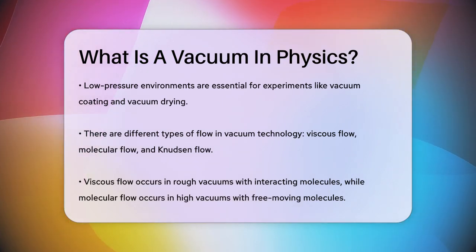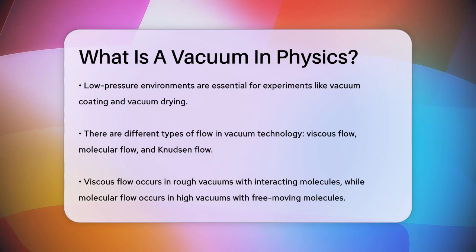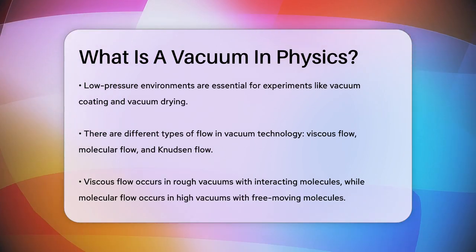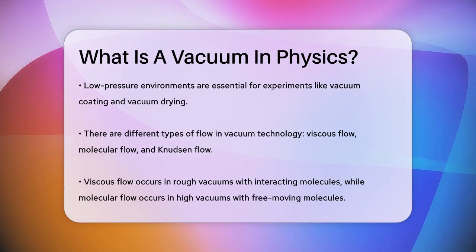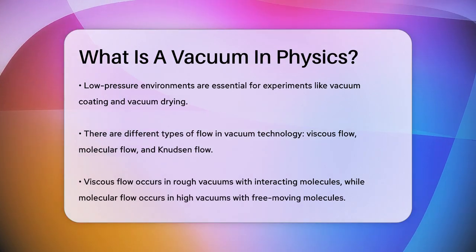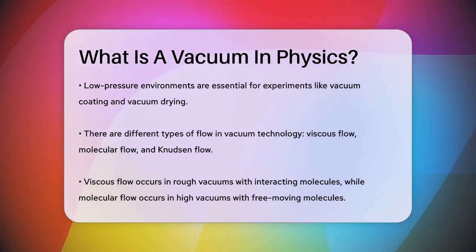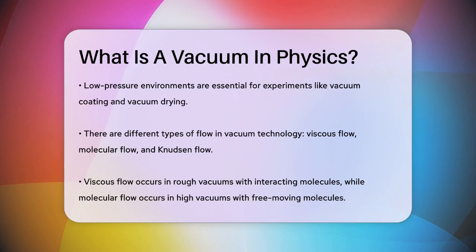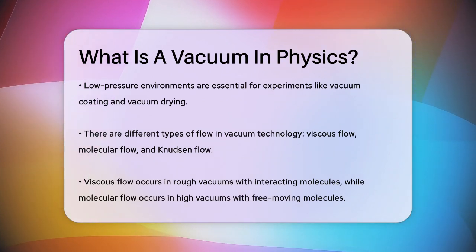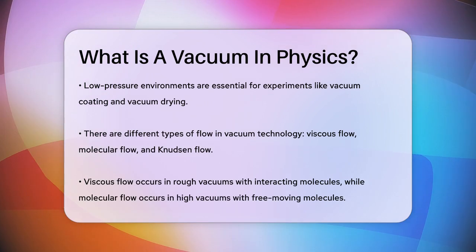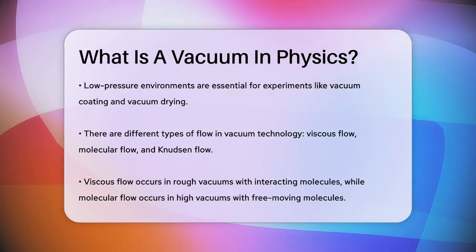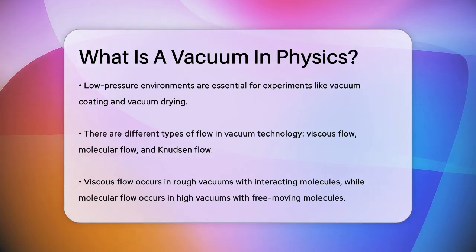There are different types of flow in vacuum technology, such as viscous flow, molecular flow, and Knudsen flow. Viscous flow occurs in rough vacuums where the molecules interact with each other, while molecular flow happens in high and ultra-high vacuums where molecules move freely without interference. Knudsen flow is the transitional range between these two types.